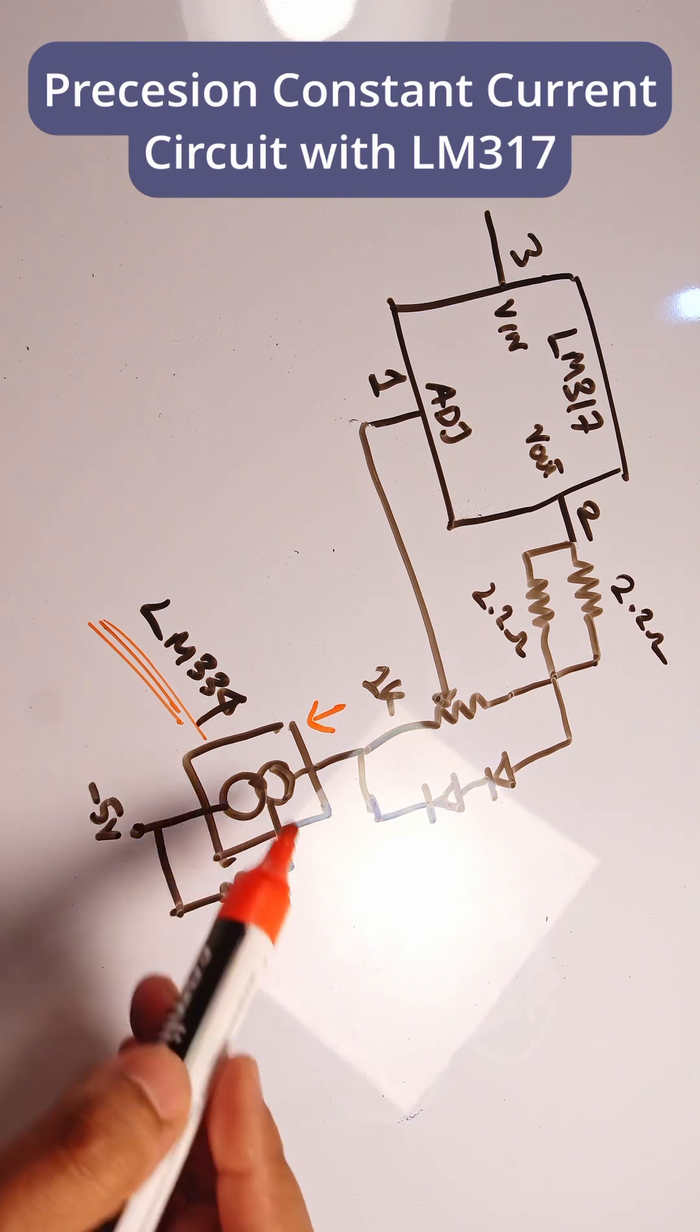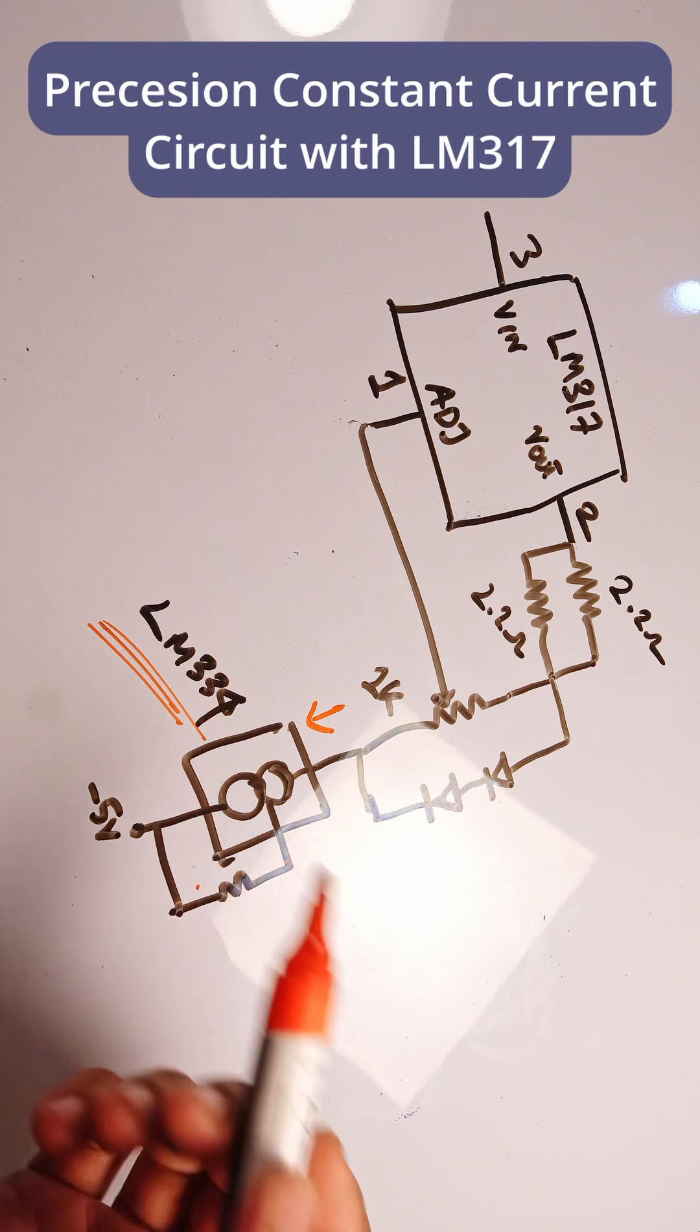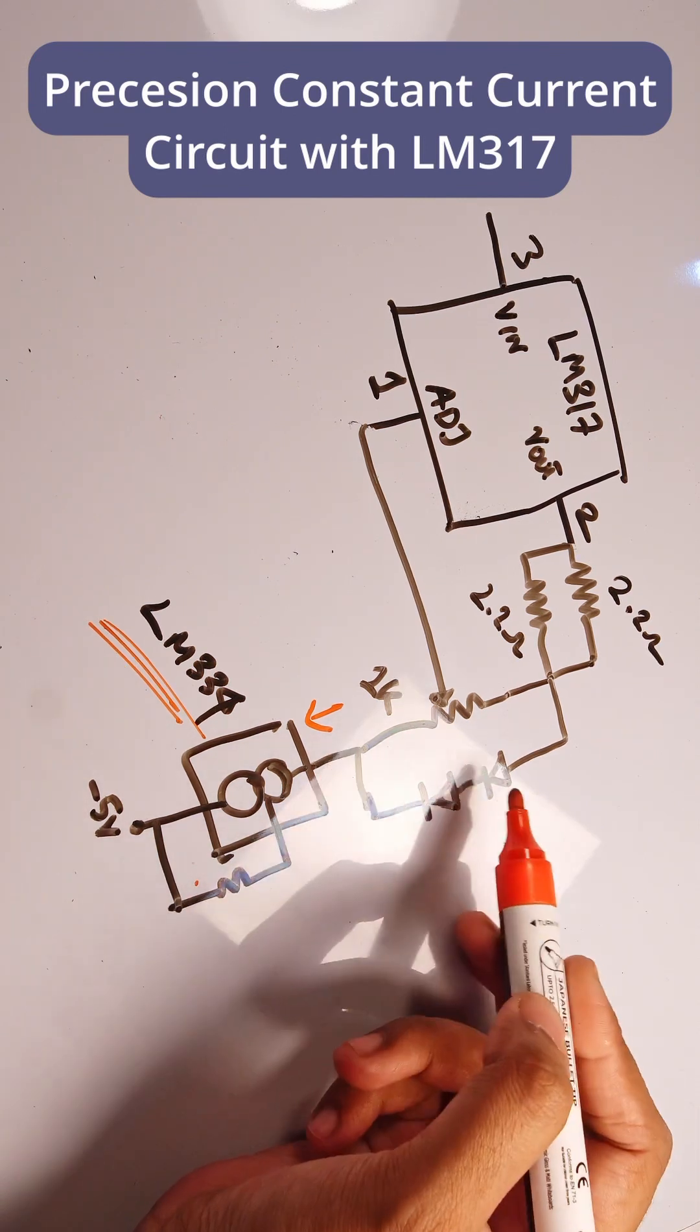In here I think anything 5 milliamps to 10 milliamps is just fine. It's not critical. Definitely this current is just to make these two diodes forward biased.